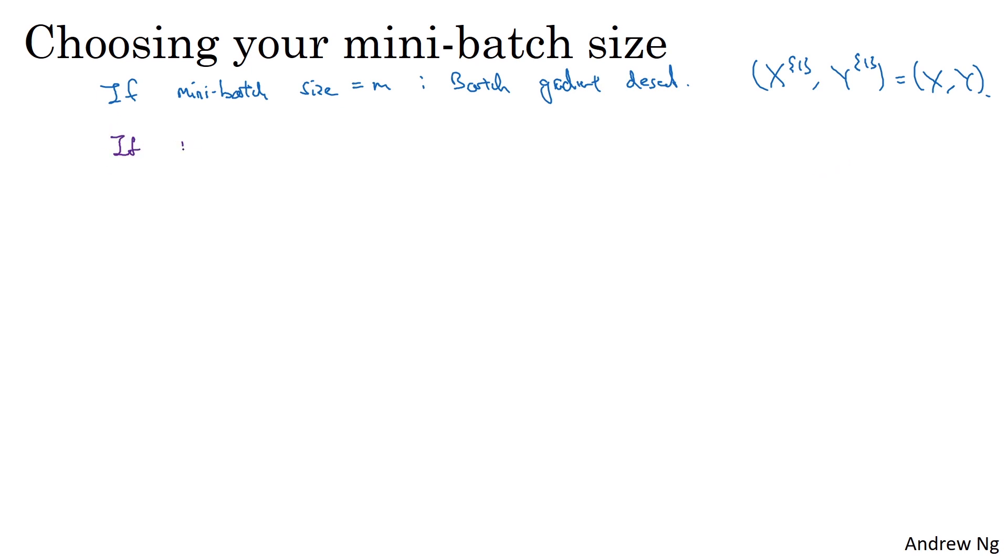The other extreme would be if your mini-batch size were equal to 1. This gives you an algorithm called stochastic gradient descent. And here, every example is its own mini-batch. So what you do in this case is you look at the first mini-batch x1, y1. But when your mini-batch size is 1, this just has your first training example, and you take a gradient descent step with your first training example.